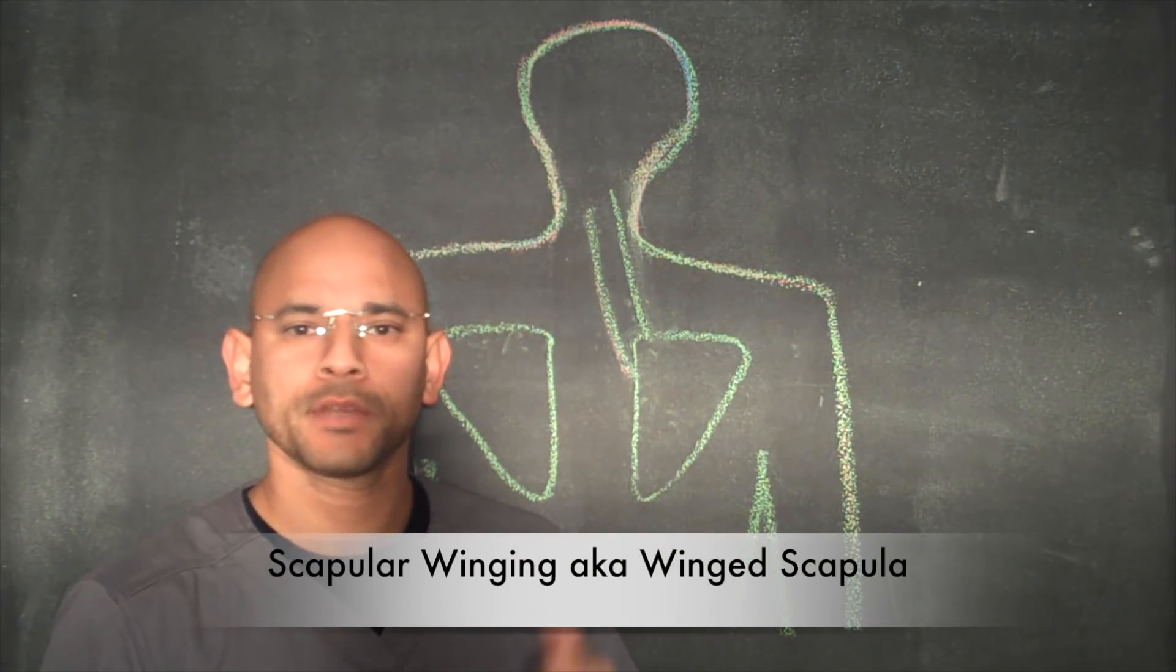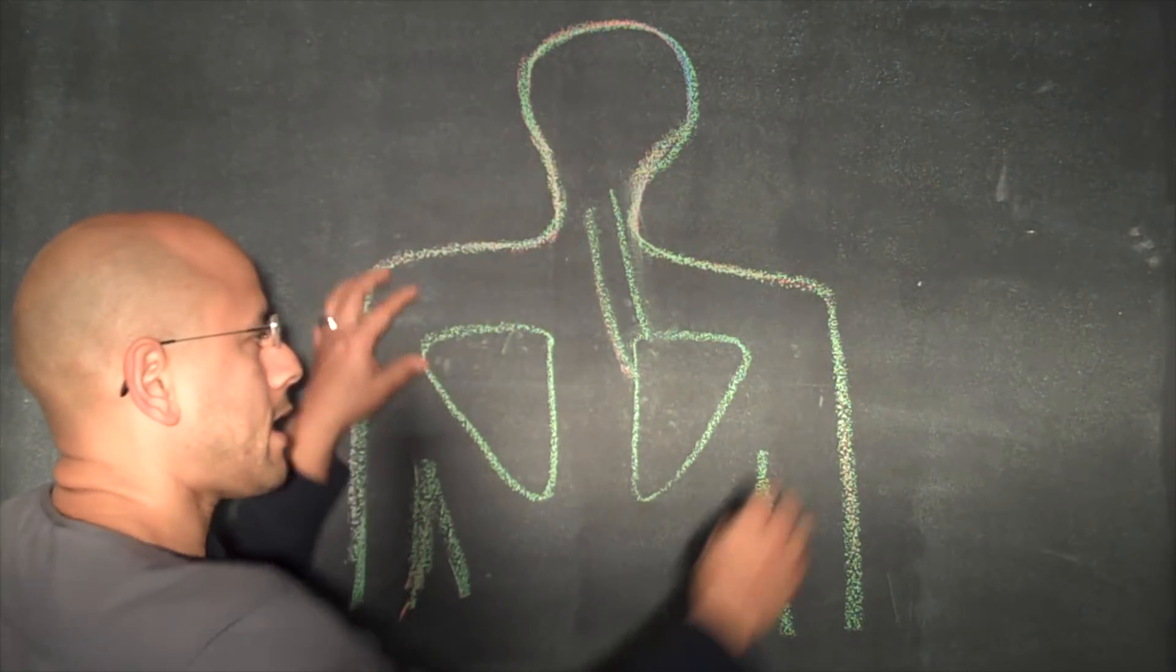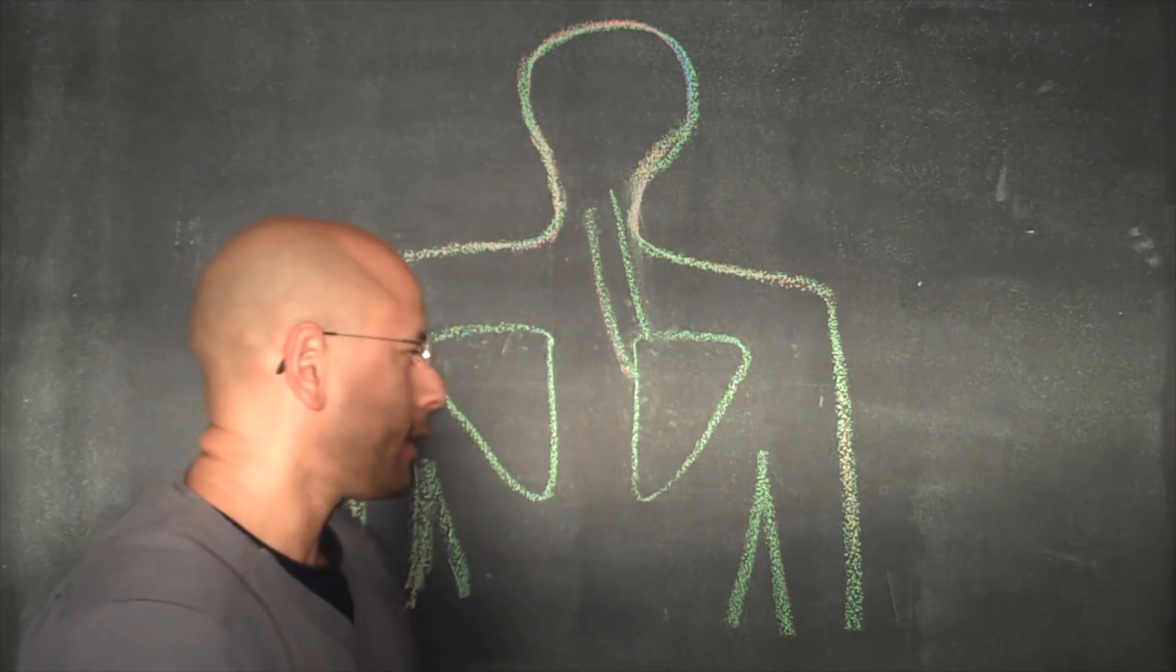Now, if you don't know what that is, I'm going to take you to the blackboard here and we have a drawing of a person's back. We have the head, we have the shoulders, and in the middle back area, we have the shoulder blades.